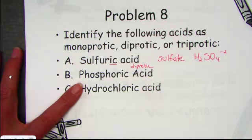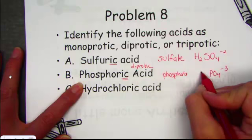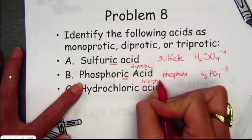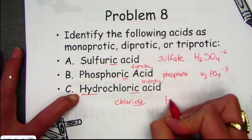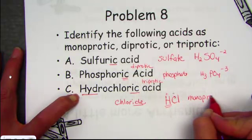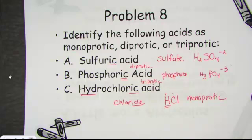Phosphoric acid came from the polyatomic ion called phosphate, which carries a −3 charge, so this becomes a triprotic acid needing three hydrogens to balance the charge. The 'hydro-root-ic' naming came from the ion called chloride, making it a monoprotic acid. The number of H's determines whether we call it mono-, di-, or triprotic according to the Arrhenius definition.